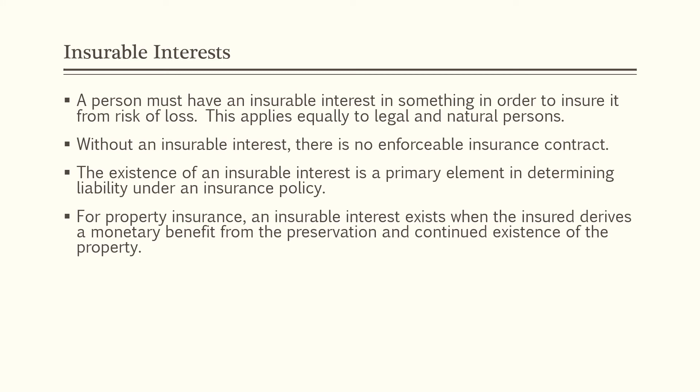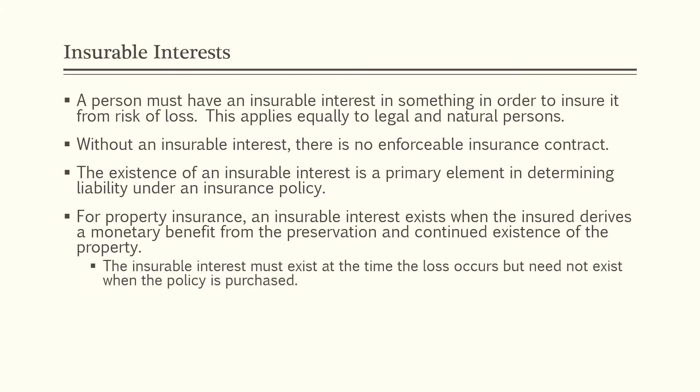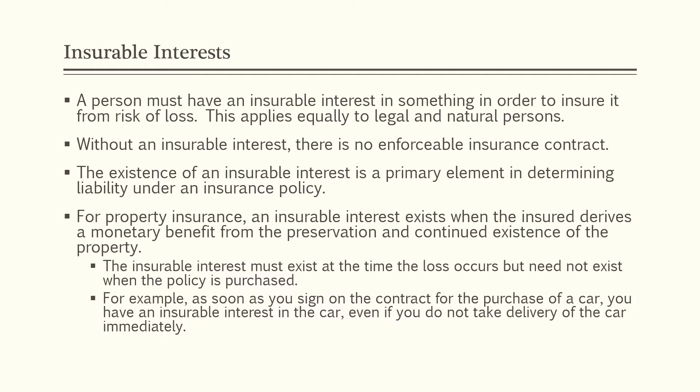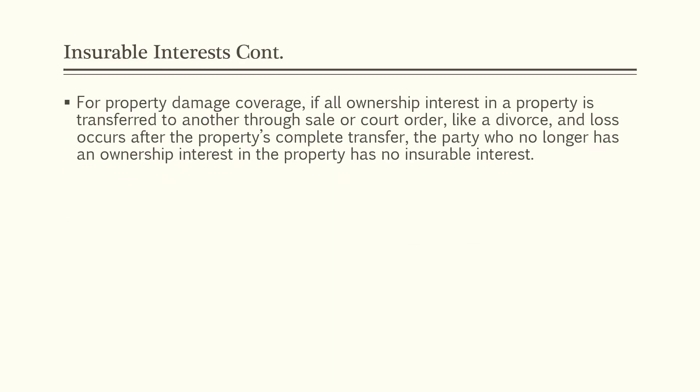For property insurance, an insurable interest exists when the insured derives a monetary benefit from the preservation and continued existence of the property. The insurable interest must exist at the time loss occurs but need not exist when the policy is purchased. For example, as soon as you sign the contract for the purchase of a car, you have an insurable interest in the car even if you do not take physical possession of the car immediately. For property damage coverage, if all ownership interest in a property is transferred through sale or court order like a divorce decree, and loss occurs after the complete transfer, the party who no longer has an ownership interest has no insurable interest.